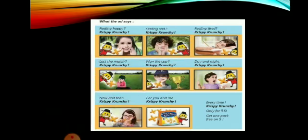Here is an ad for 'Crispy Crunchy.' It shows animated pictures for every occasion: feeling happy — Crispy Crunchy; feeling sad — Crispy Crunchy; feeling tired — Crispy Crunchy; lost the match — Crispy Crunchy; won the cup — Crispy Crunchy; day and night, now and then, for you and me, every time — Crispy Crunchy. Only for rupees 5, get one pack free on 5.